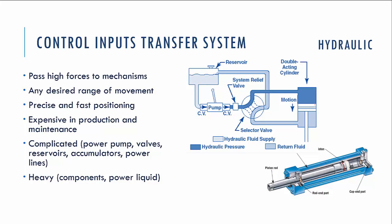The hydraulic system is better for bigger aircraft because it can pass high forces to mechanisms — we're not limited by the forces applied to control inputs. It depends only on the pressure the oil pump develops. We can create any desired range of movement; it's just a question of actuator design. This system also provides precise and fast positioning of control surfaces because the liquid is incompressible.